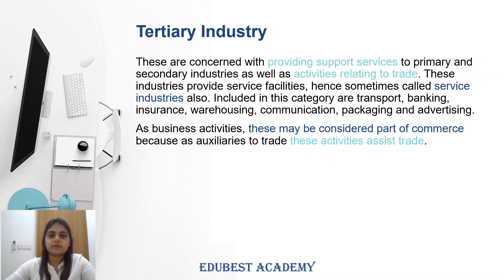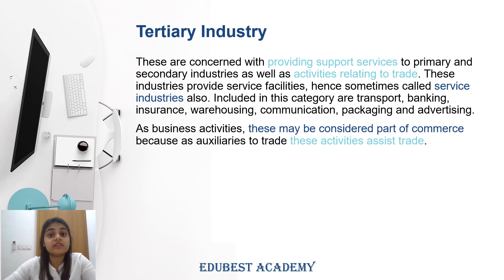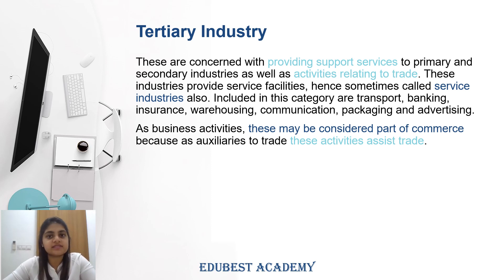The last industry is tertiary industry. Tertiary industry basically provides support services to primary industry and secondary industry, as well as all trade-related activities. That is why we often call it service industry, because all service-related activities such as warehousing, banking, transportation, communication, and packaging are formed under tertiary industries. Tertiary industry is the most important nowadays — primary can produce its goods, but how will it provide them to secondary without transport? And how will secondary deliver finished goods to consumers without storage or warehousing facilities? Therefore, tertiary industries play a very important supporting role.